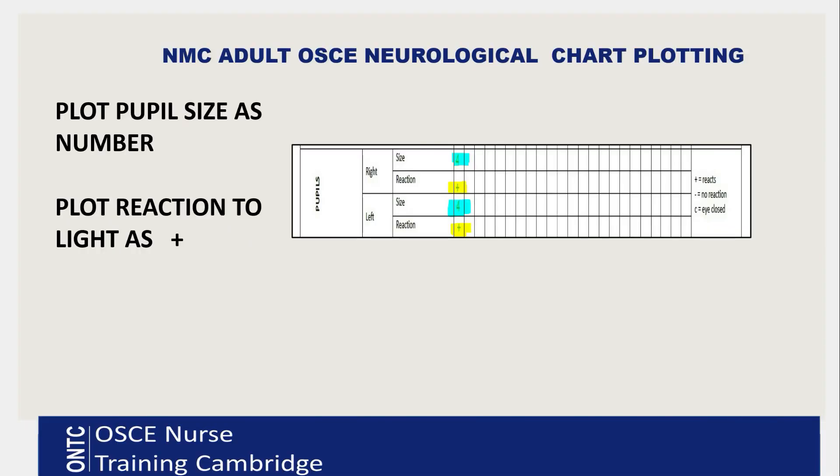Next, plot pupil size and reaction to light. Check your patient's pupil size accurately for both the right eye and the left eye. First, plot the size — work out the pupil size and add that number into the size box. I've added four for the right eye and four for the left eye. Then check reaction to light using your pen torch. If the pupils are reactive to light, the chart asks you to plot with a plus sign. Put a plus sign for the right eye and a plus sign for the left eye.